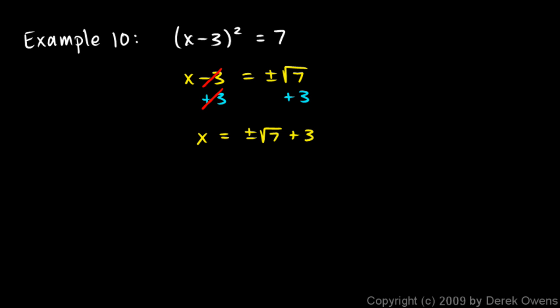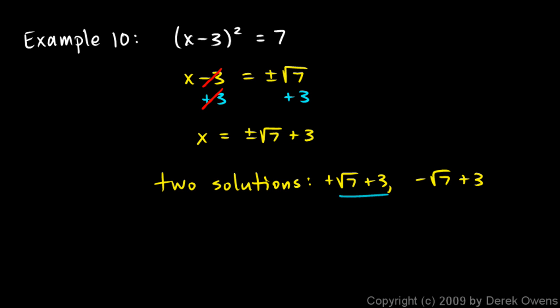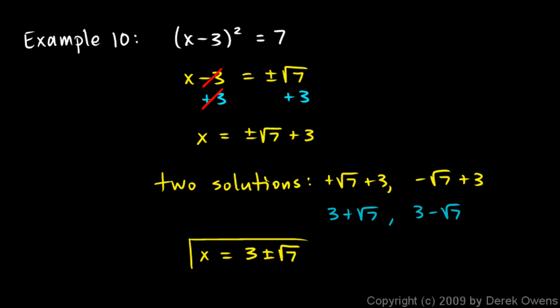So notice there are two solutions here. There's the positive square root of 7 plus 3, and there's the negative square root of 7 plus 3. It's common just to write them both together and not split them up. It's also common to write the rational number first. So it would be more commonly written as 3 plus or minus the square root of 7. Those are my two answers: 3 plus the square root of 7 and 3 minus the square root of 7.